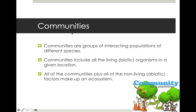A population, from our previous lecture, is a group of animals that are all the same species, capable of interacting and interbreeding with one another to produce fertile offspring. A community is more than one population of animals interacting with one another.